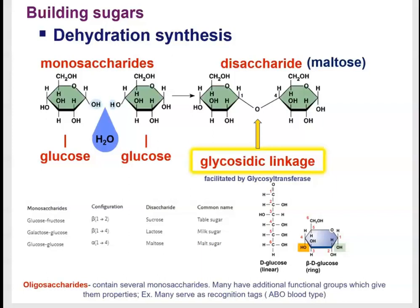To build carbohydrate polymers, two monosaccharides come together: for example, glucose at carbon 1 and glucose at carbon 4 each offer a hydroxyl group. These react to form water (H₂O), leaving one oxygen behind as a glycosidic linkage — the covalent bond between monomers — facilitated by an enzyme. Combining two monosaccharides creates a disaccharide: glucose and fructose form sucrose, and galactose and glucose form lactose.